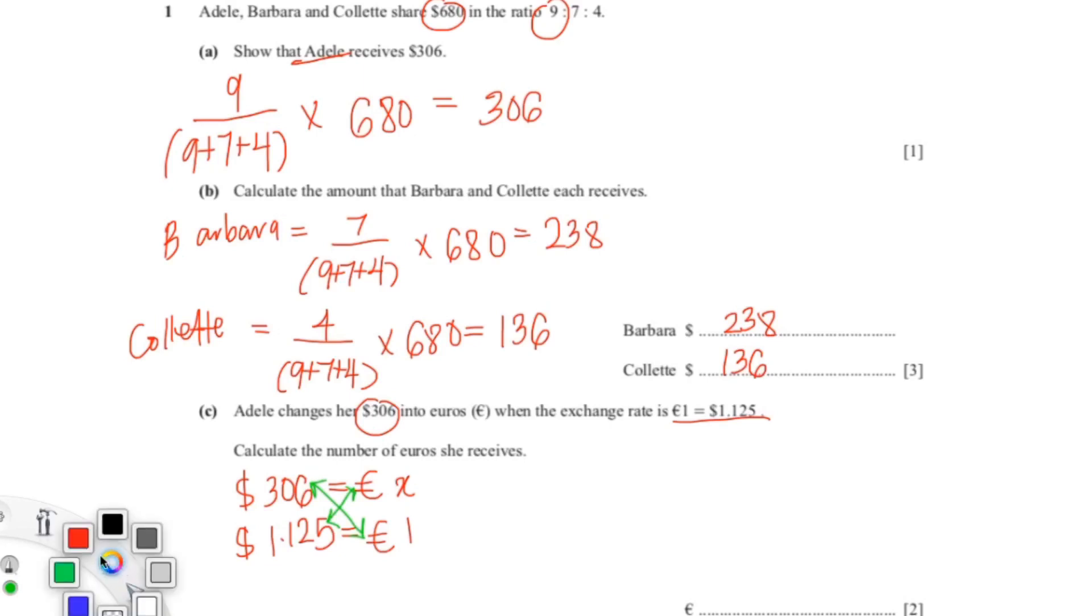And you get 1.125x equals 306. So when you want to isolate x, you bring 1.125 to the other side, so it'd be 306 over 1.125. And you put this into your calculator and you will get a value of